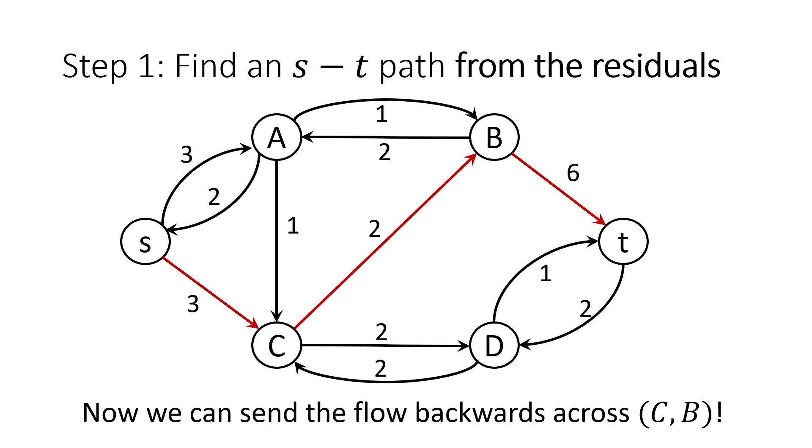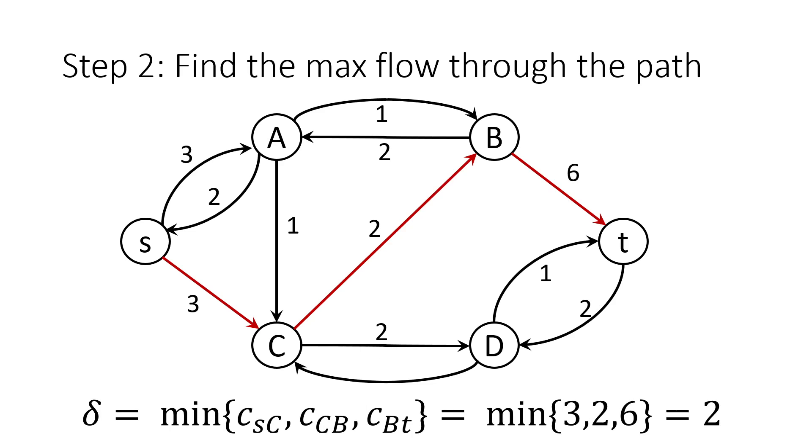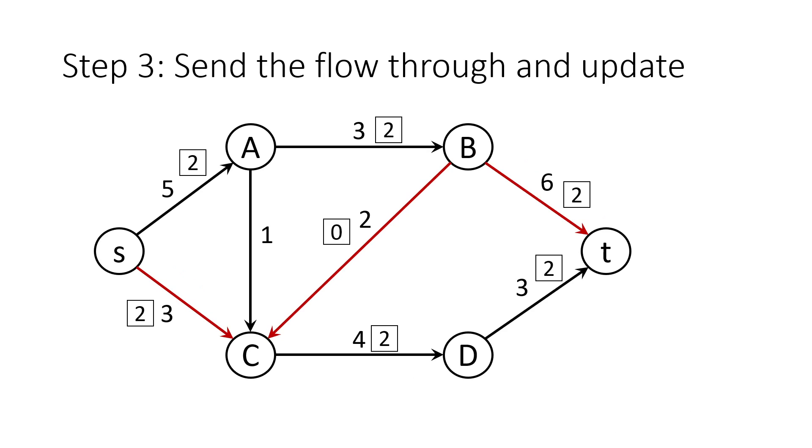Now, instead of finding a path through the original graph, we look through a path through the residual graph. The path that we've chosen here is the green one that we would have liked to have chosen back in our naive approach, but we're unable to choose since that approach didn't support backwards edges. The minimum amount of flow through this path is 2. And here we have our updated graph.